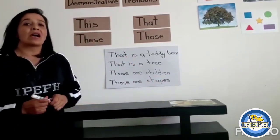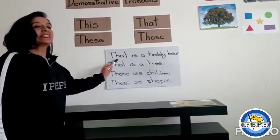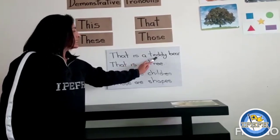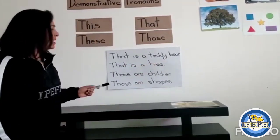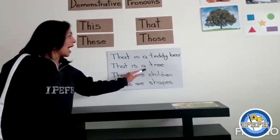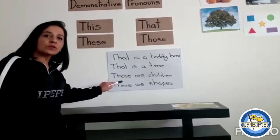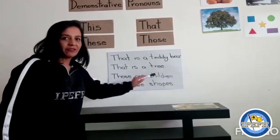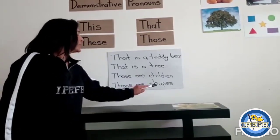Okay boys and girls, now together let's read aloud, please: that is a teddy bear, that is a tree, those are children, those are shapes.